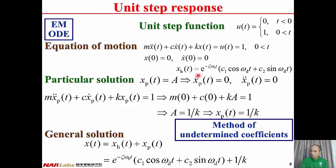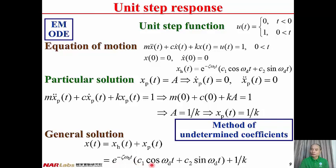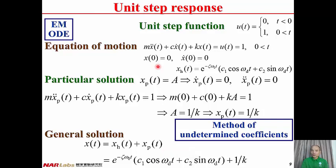With the homogeneous solution Xh and the particular solution Xp, we combine them to get the general solution: X(t) = e^(−ζω₀t)(C₁cos(ωDt) + C₂sin(ωDt)) + 1/K, where C₁ and C₂ are two coefficients of integration. Applying the initial conditions — displacement equal to zero and initial velocity equal to zero — we can solve for C₁ and C₂.